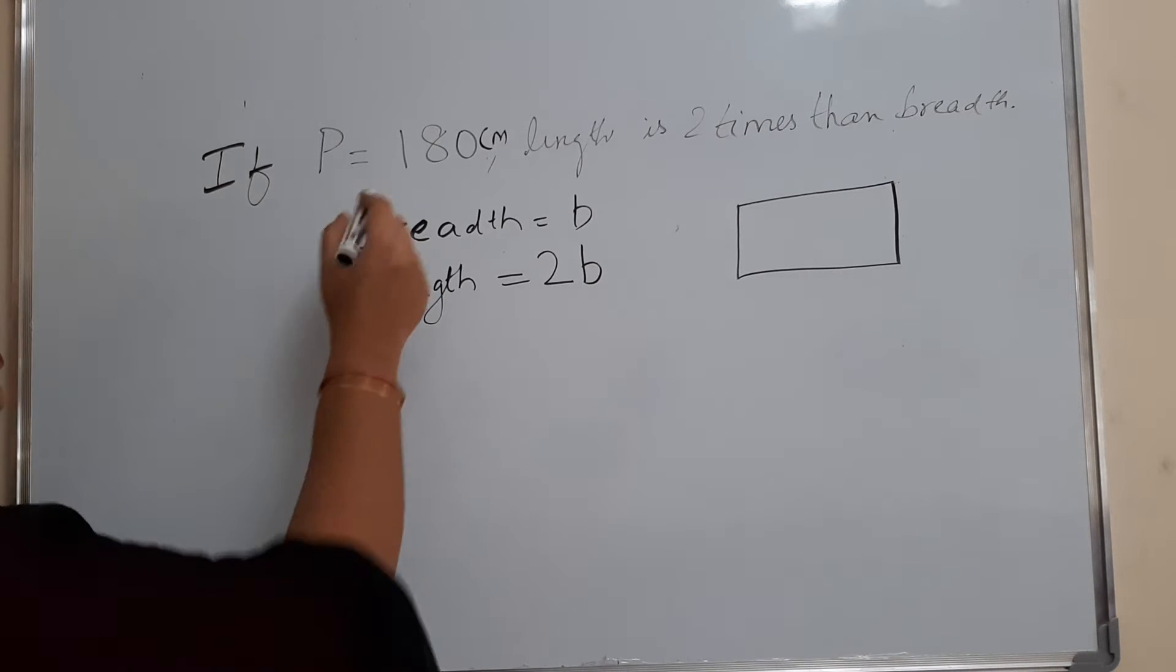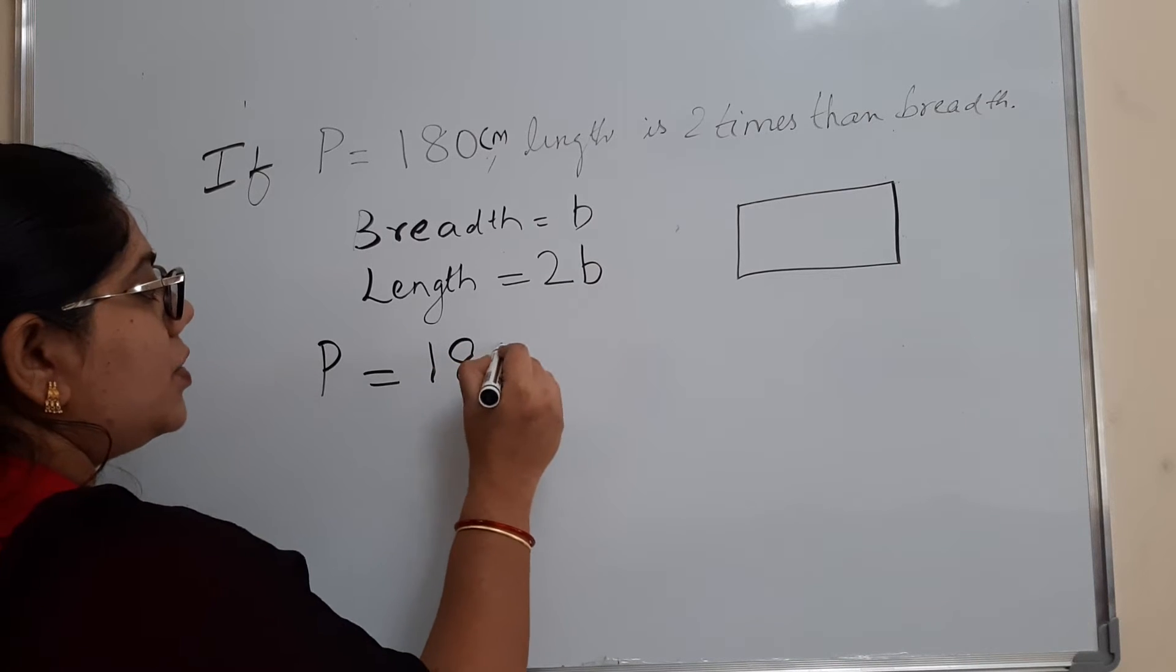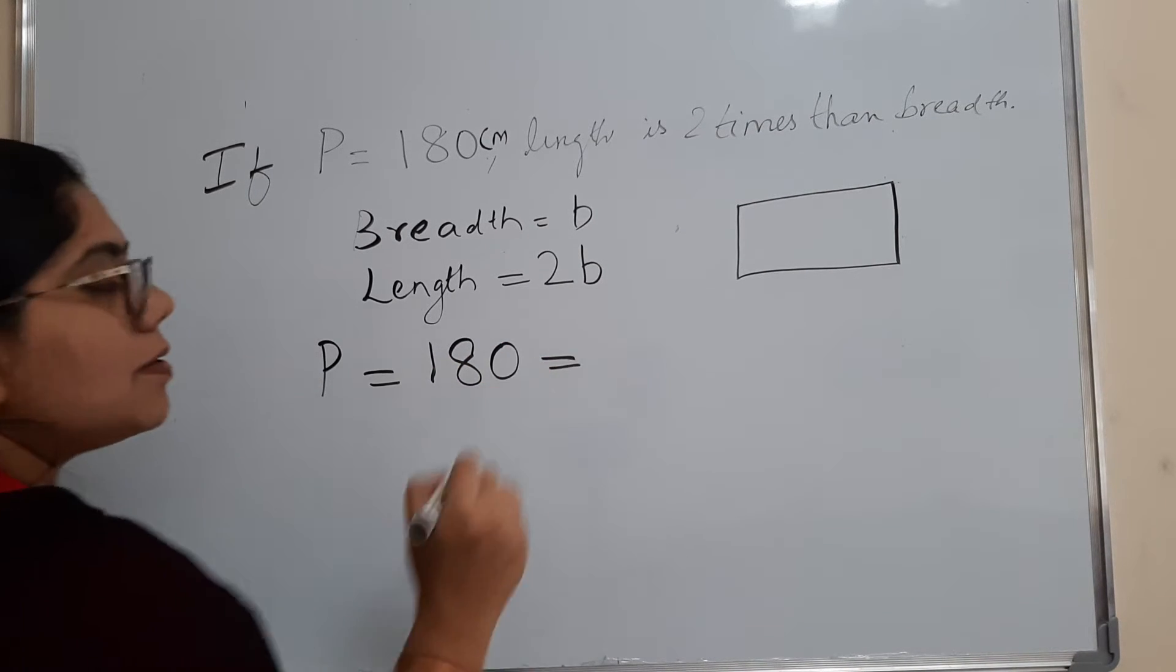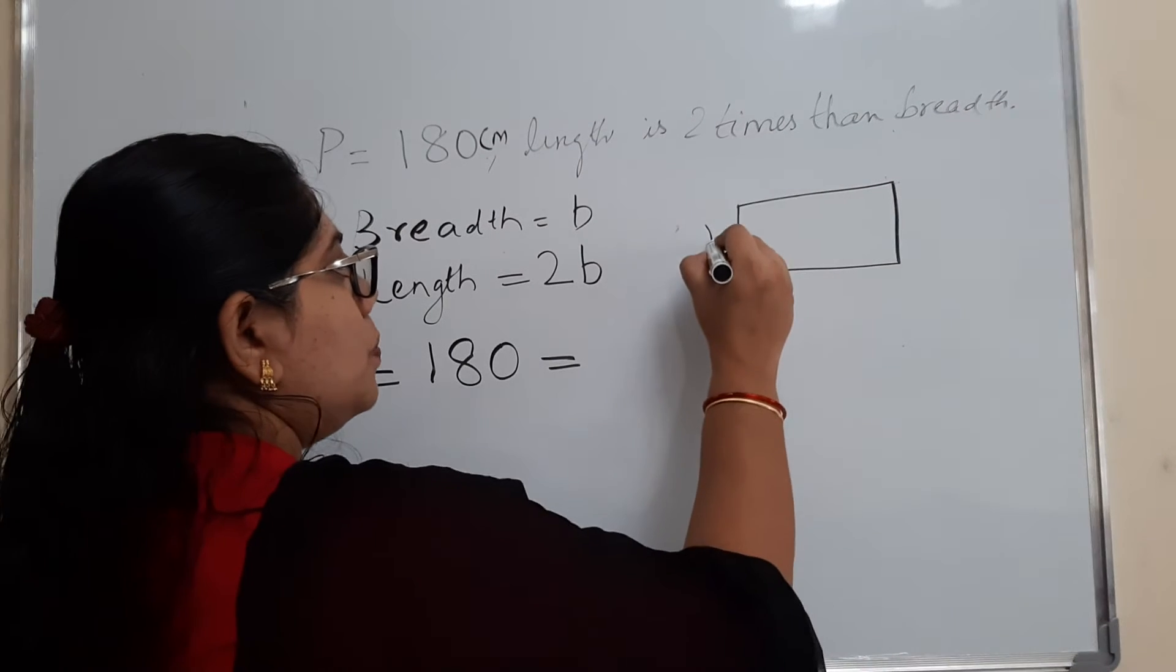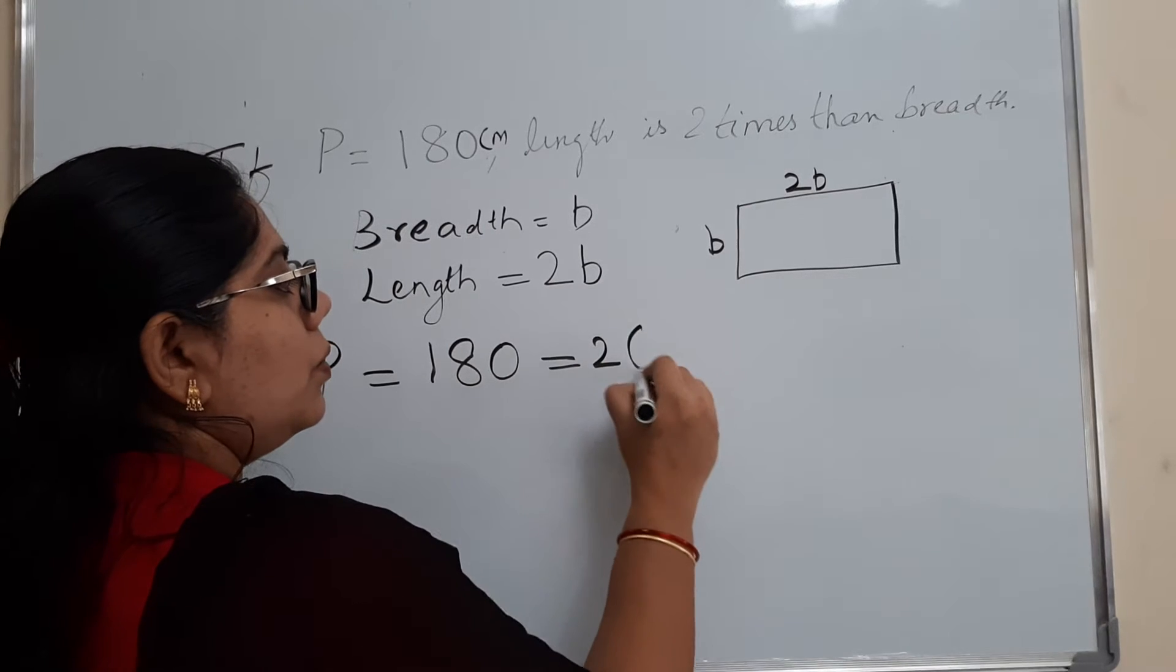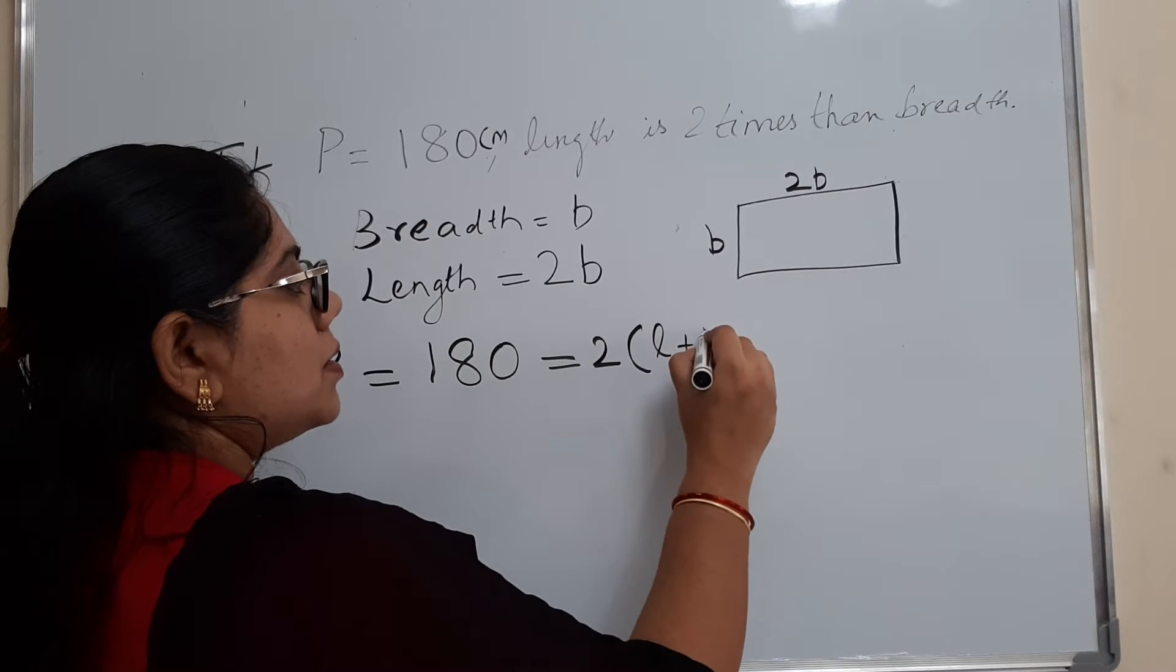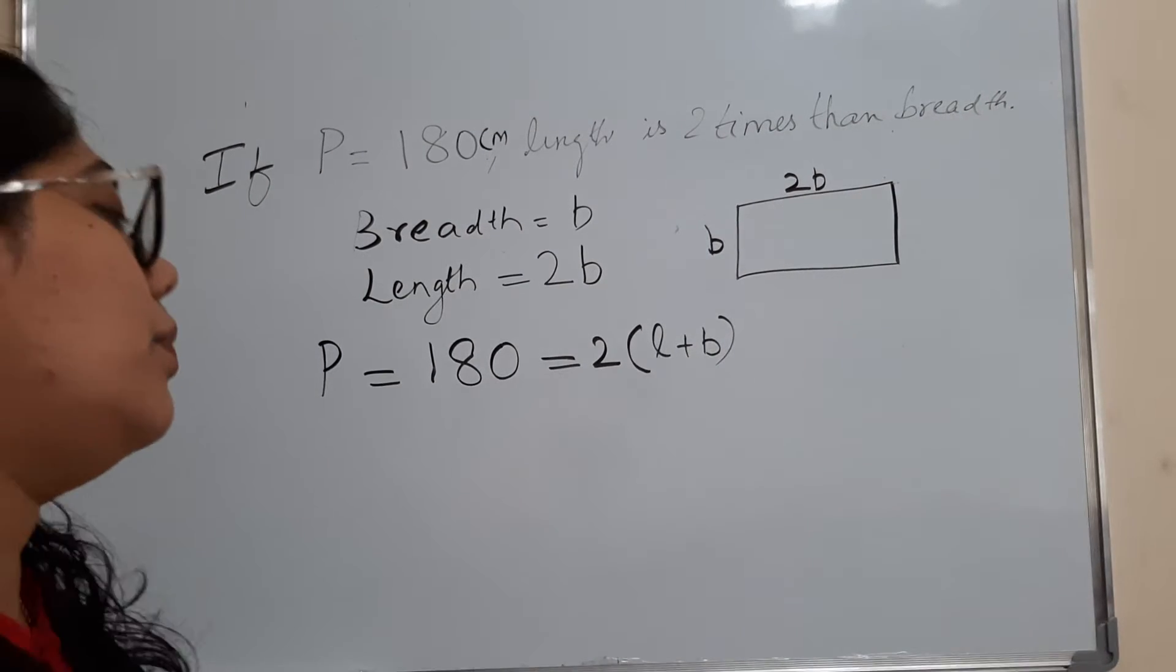Now what is the perimeter? They have given the perimeter as 180 centimeters. And what is the formula of the perimeter of a rectangle? So this is B, this is 2B. 2 into (L plus B) is the formula of perimeter of the rectangle.